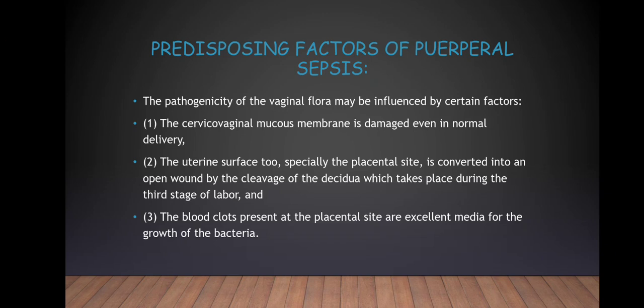These predisposing factors explain why infection occurs: even after normal delivery, the cervical vaginal mucous membrane is damaged. Similarly, the uterine surface is damaged — where the placenta was attached, an open wound is created after detachment, which is where infection can set in. Additionally, blood clots present at the placental site serve as excellent media for bacterial growth.